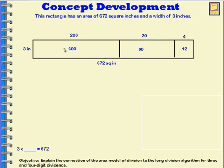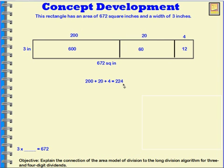I have figured out the area of this rectangle by multiplying 3 times 200. The area of this rectangle was figured out by multiplying 20 times 3. And this last section we got by multiplying 4 times 3. So now, if I put 200, 20, and 4 together, I get 224. So the length of this rectangle is 224.